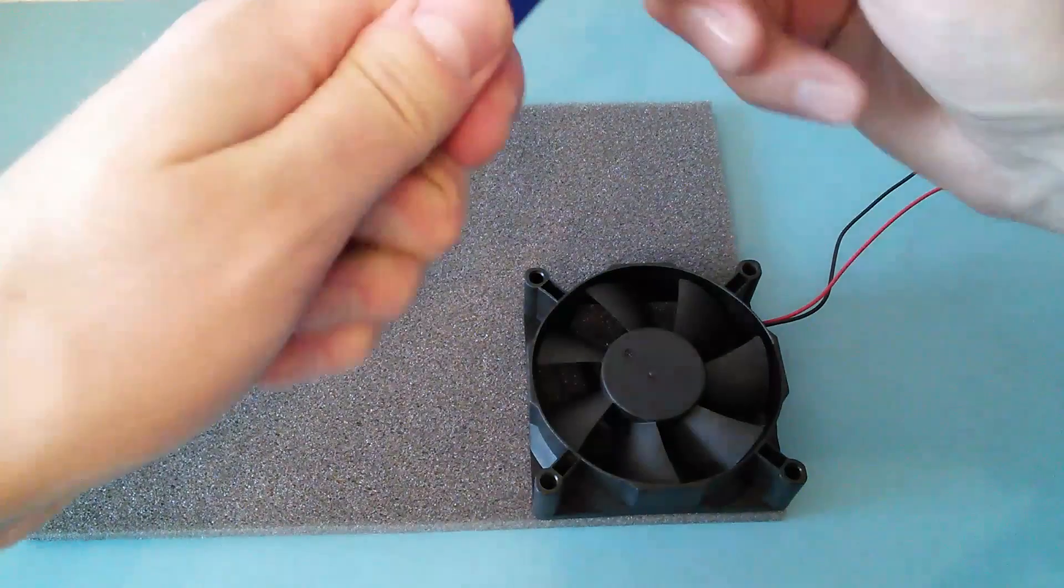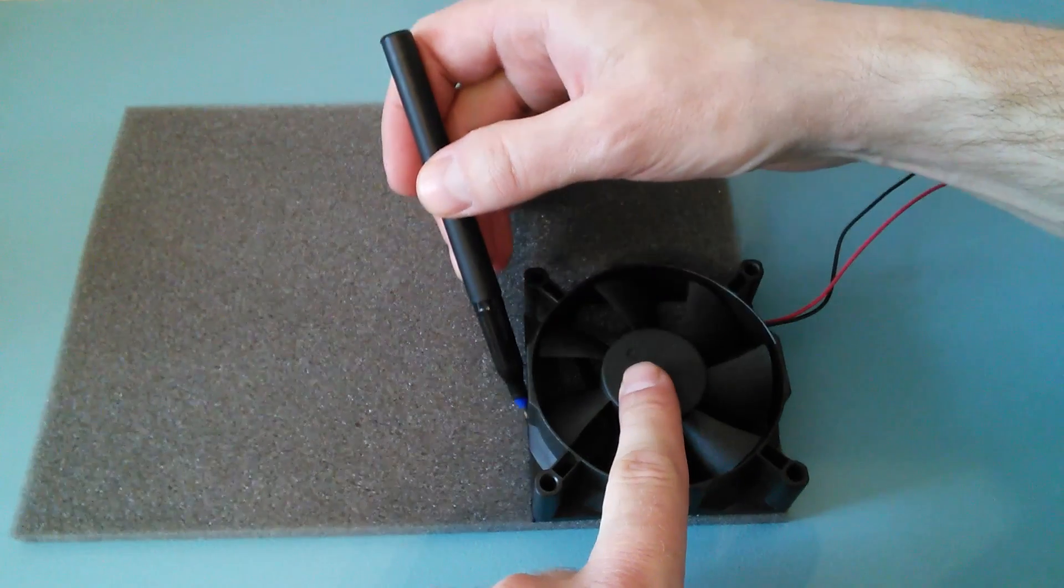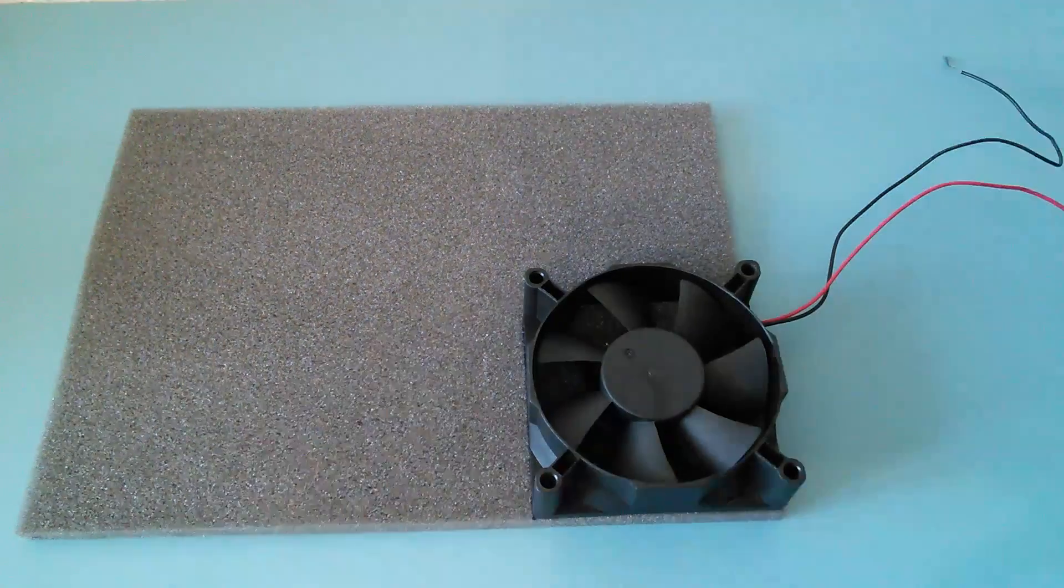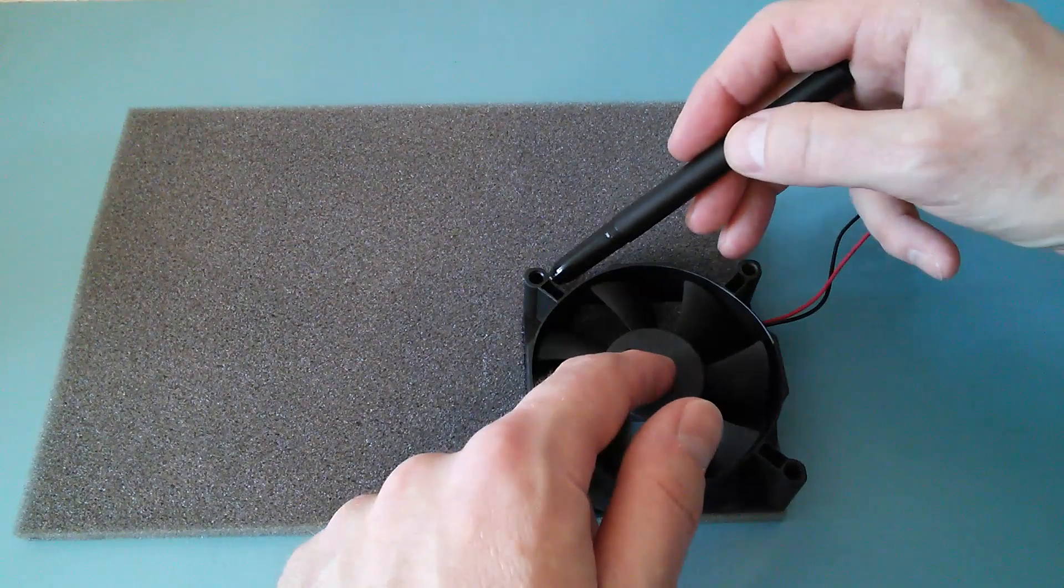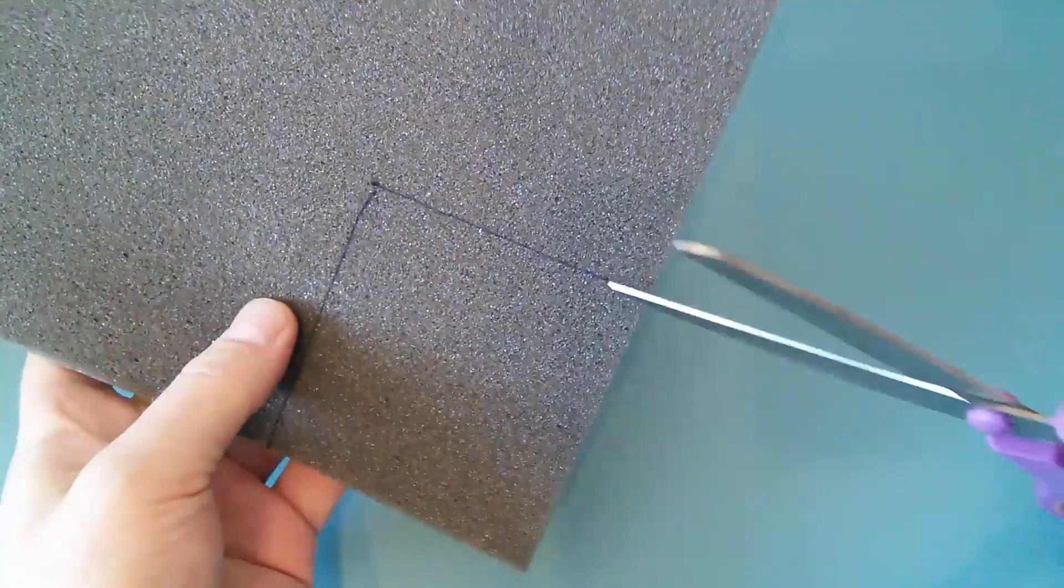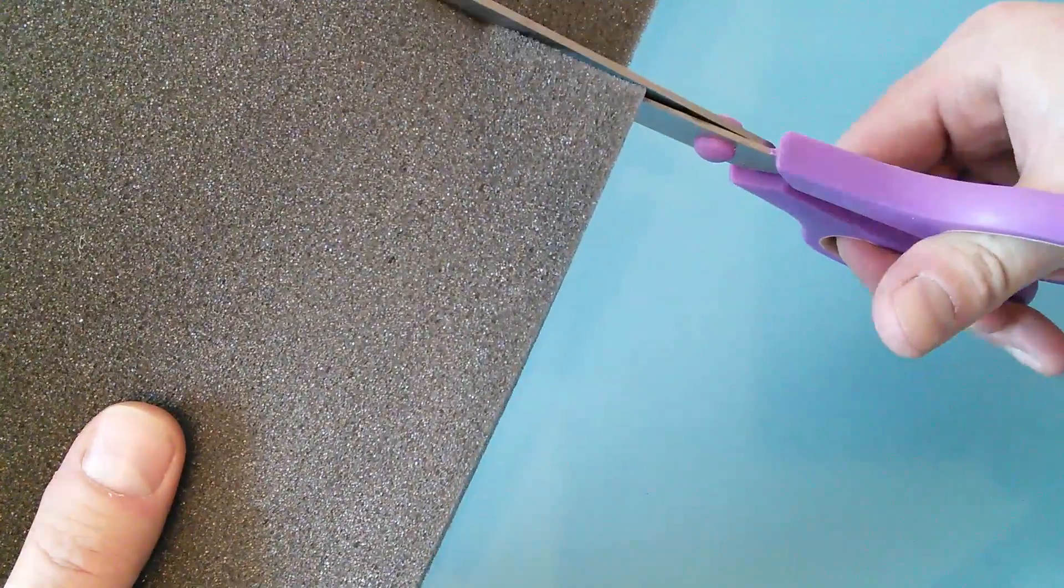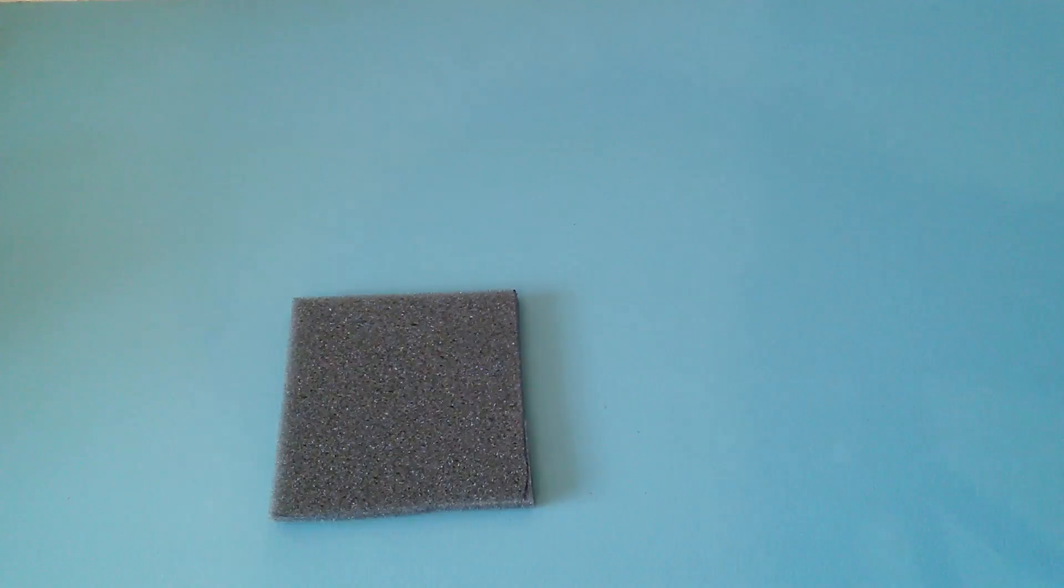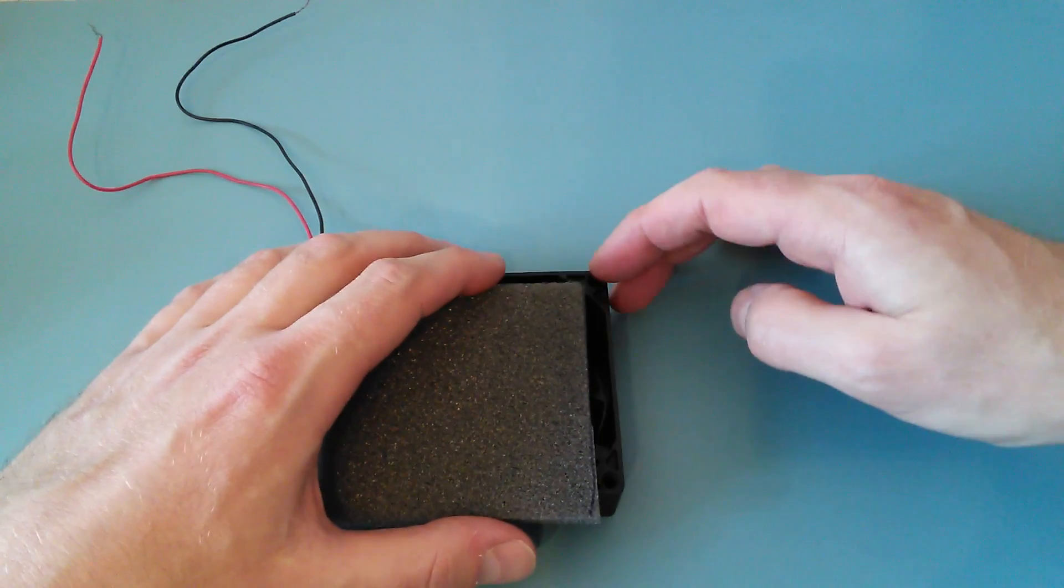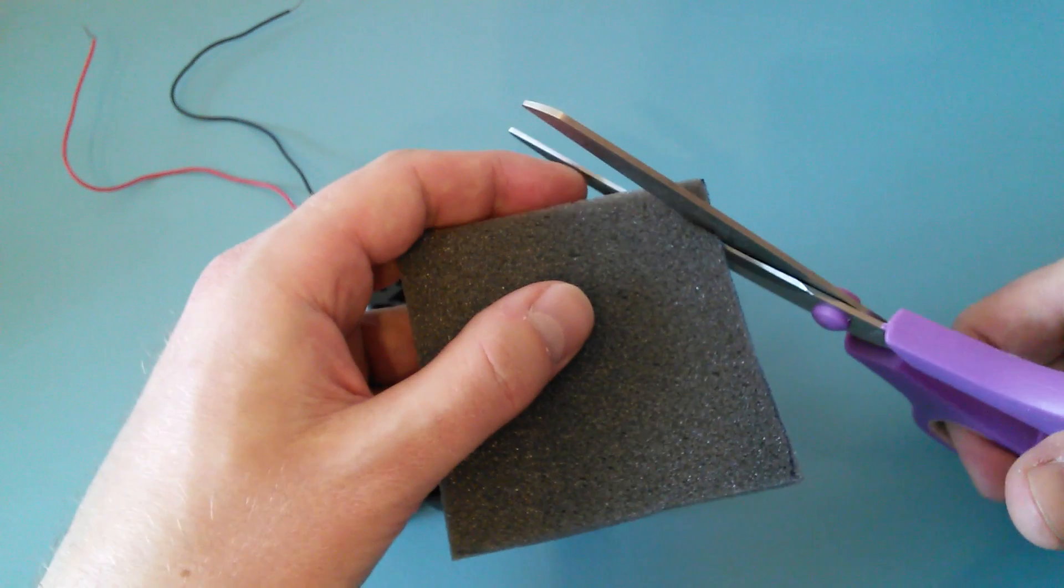Put a fan on the foam and draw the outer shape of the fan. Grab a pair of scissors and cut the foam along the lines. Now cut the corners of the filter.